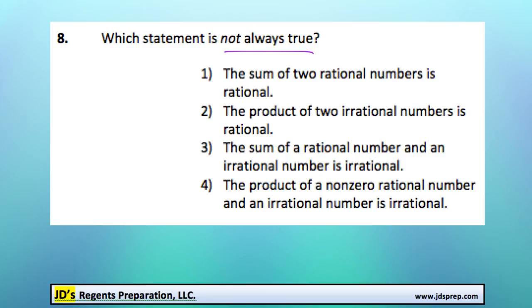Let's take a look at the first one. The sum of two rational numbers is rational. That's a pretty easy one. That would always be true. You could add 2 plus 2 and get 4. Those are all rational numbers.